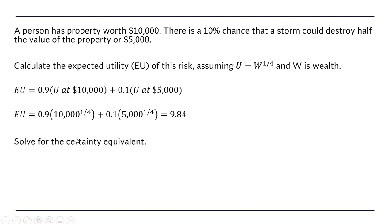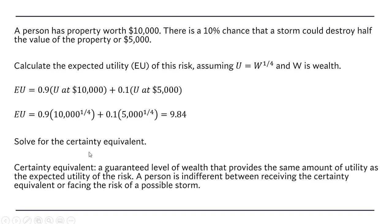Now let's solve for the certainty equivalent. The certainty equivalent is a guaranteed level of wealth that provides the same amount of utility as the expected utility of the risk. A person is indifferent between receiving the certainty equivalent or facing the risk of a possible storm.